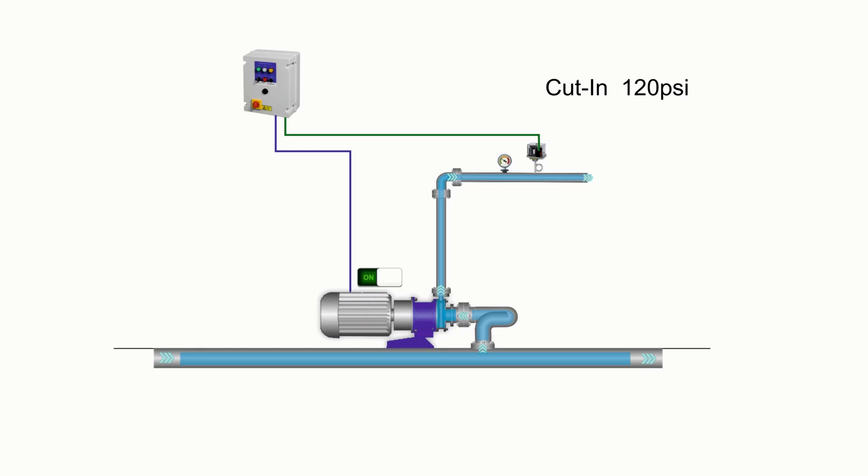The cut-out pressure is set at 140 PSI in our system. When the jockey pump runs and the pressure reaches 140 PSI, it will shut off the pump.